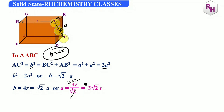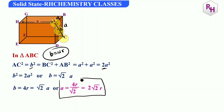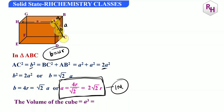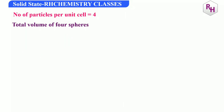Therefore, A = 4R/√2 = 4R/(√2) = 2√2·R. So A = 2√2·R. This is very important — worth one mark. The volume of the cube is A³ = (2√2·R)³.